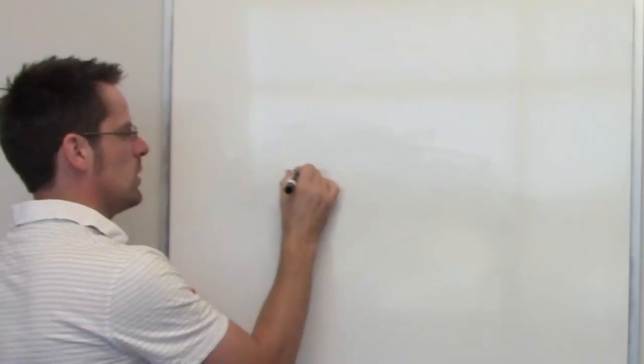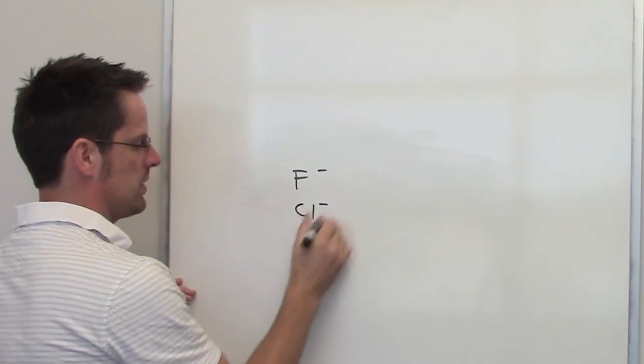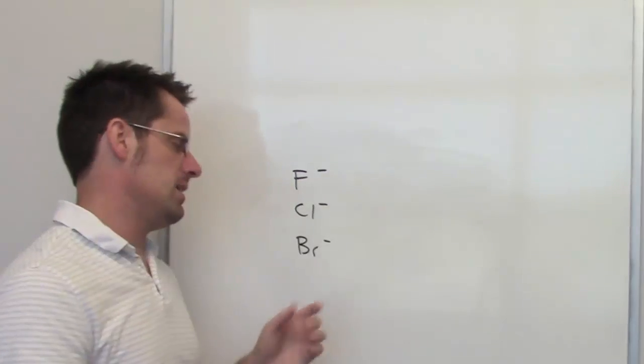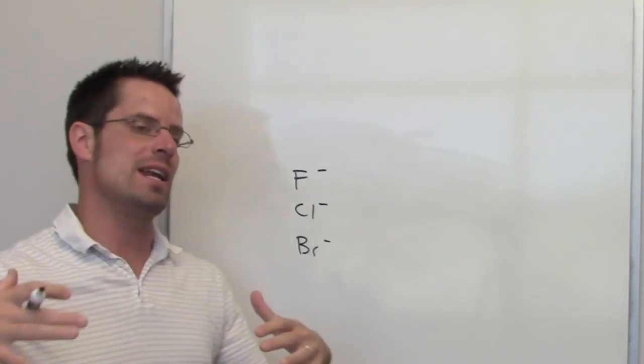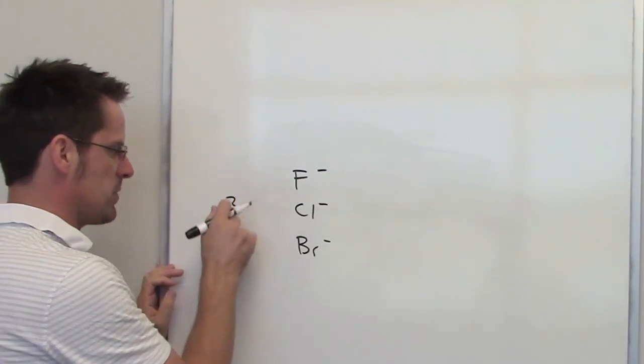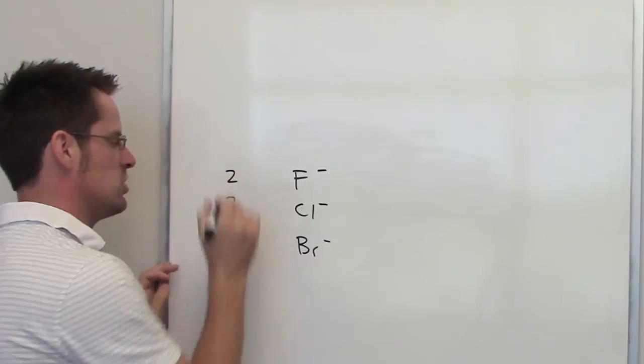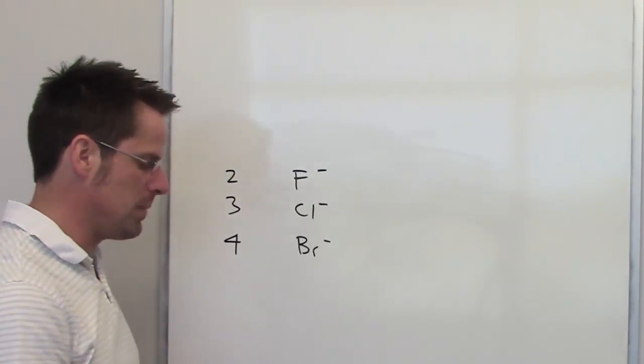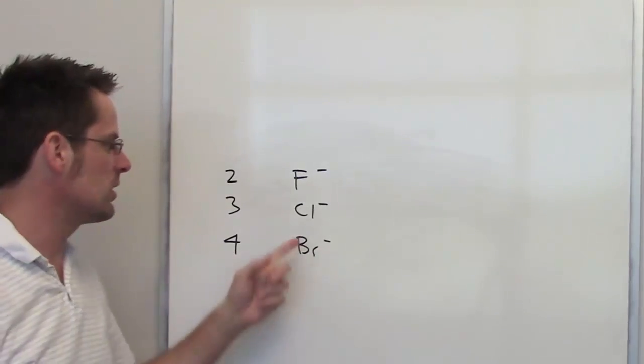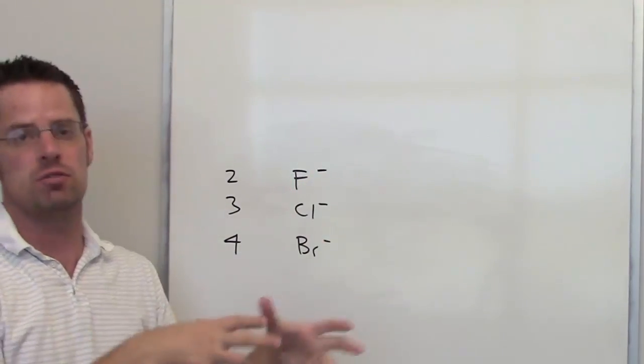In this last question, we're asked to compare fluoride with chloride with bromide. For the same reasons I discussed in an earlier video, bromine's outermost electrons are in a much larger 4 energy level, while chlorine's are in a 3 energy level and fluorine's are in a 2 energy level. That means that bromine's outermost orbitals are going to be much larger in size than chlorine's, which will be larger in size than fluorine's.